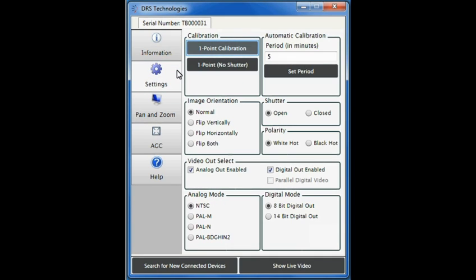Here you can perform several functions. Under calibration, you can manually trigger a one point calibration or a one point no shutter through the lens calibration. Under automatic calibration, the default interval for non-uniformity correction, or NUC, is every five minutes. You can override this setting and set the period anywhere between 0 and 9,999 minutes. Then click the set period button to save your changes.